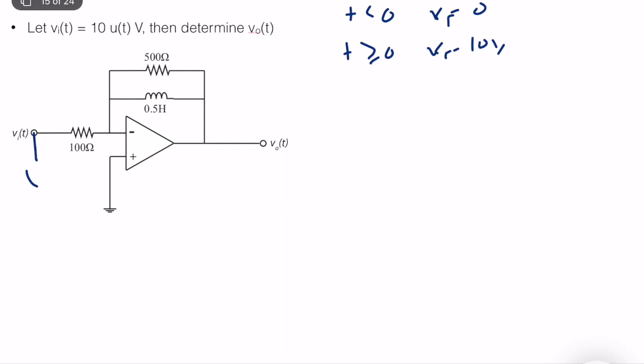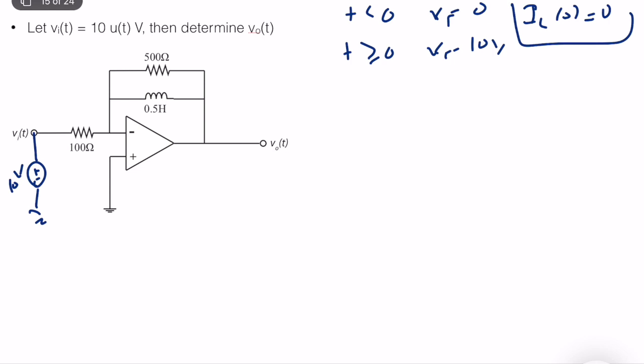We can connect the voltage source to the system accordingly. We assume that right before T equals 0, the circuit is in the steady-state condition. Since the input voltage is 0, there is no source in the system, so the inductor current IL equals 0 — that is, zero initial condition. We can then write IL(t) as I_infinity times (1 minus e to the power minus T divided by tau).